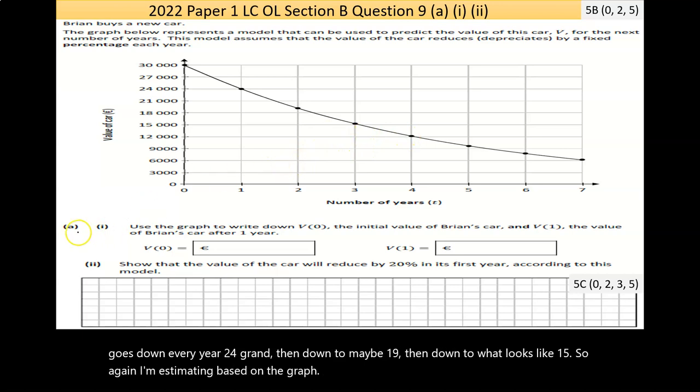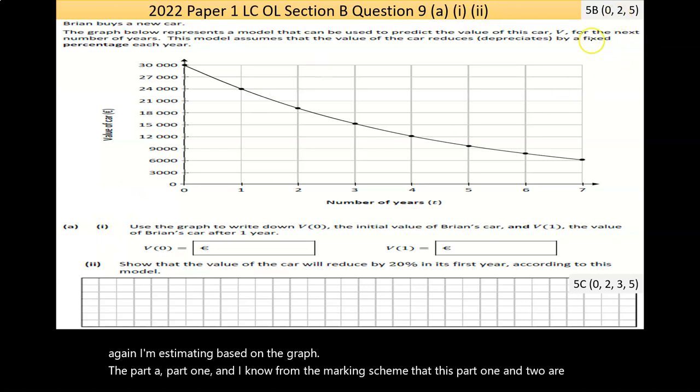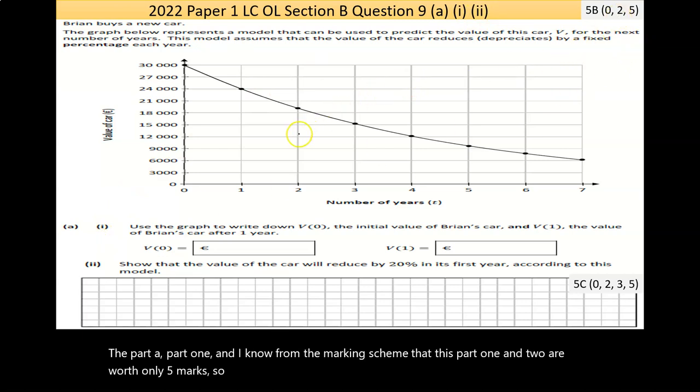Now, part A, part 1, and I know from the marking scheme that this part 1 and 2 are worth only 5 marks. I'm not sure why the marking scheme is so low. Usually it's like 5 marks for each part, for whatever reason to fit the curve.